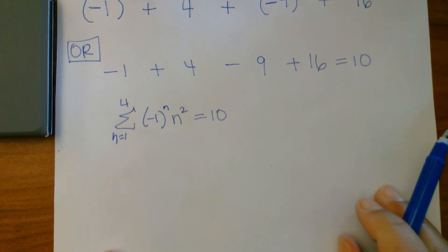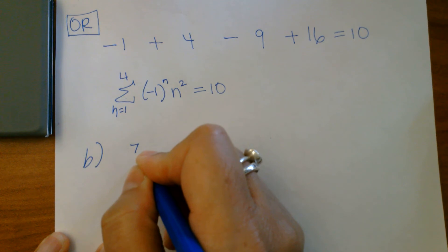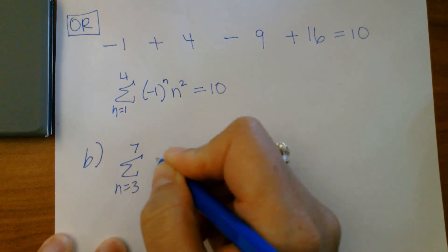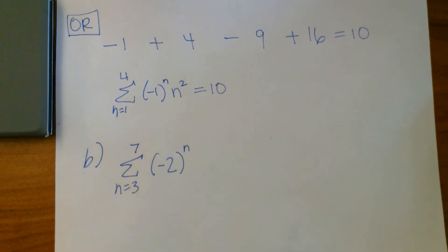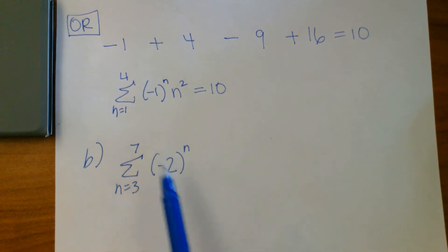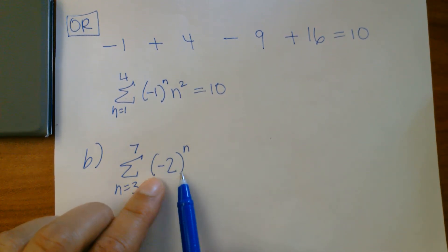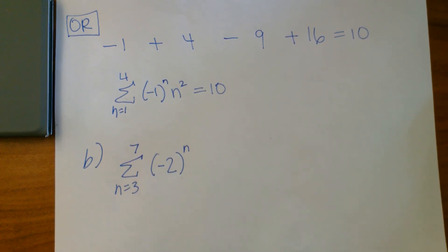For part B, I would like you to try part B first. So I would like you to pause the video and try it on your own. Try the exponent key. You're going from three to seven. And the important part: you need the parentheses. Please, you need the parentheses when you do it in the calculator. So pause the video, please.